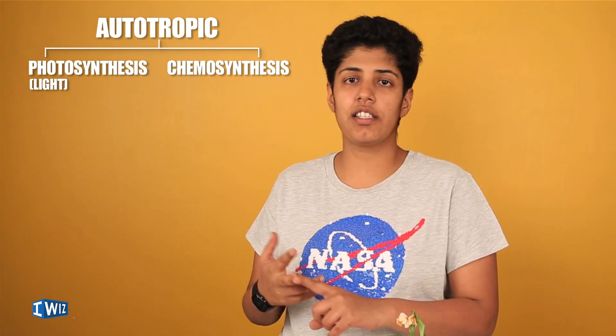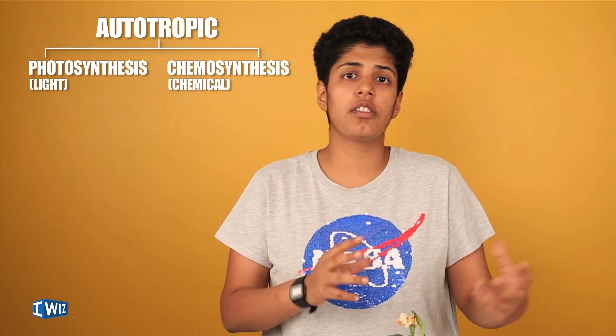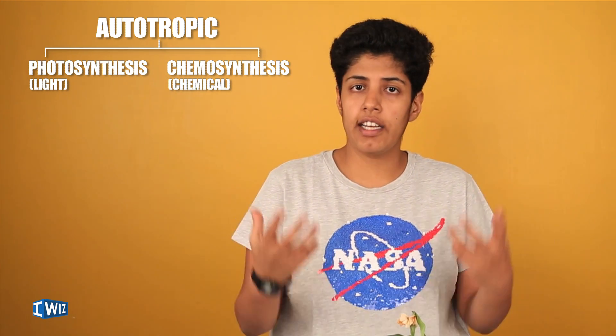Autotrophic nutrition is actually of two kinds: we have photosynthesis and we have chemosynthesis. 'Photo' is light and 'synthesis' is coming together, so it's about how plants make their food with the help of light energy. Chemosynthesis is the same thing — how plants make their energy using chemicals.